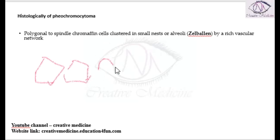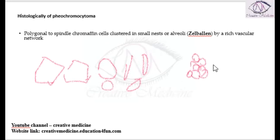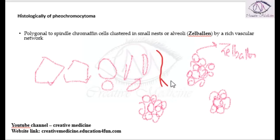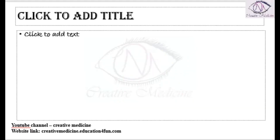Almost spindle-shaped chromatin cells are seen, and these are arranged in nests. Each nest is called a zellballen. These zellballen networks have a rich blood supply. This is histologically how pheochromocytoma appears.